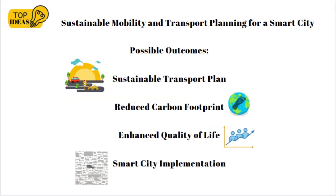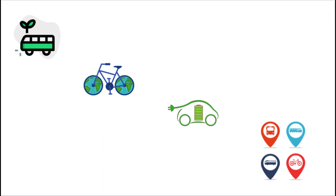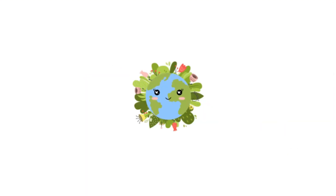By reducing emissions from vehicles and transitioning to green electric vehicles, we can mitigate the adverse impacts of transportation. As we shift towards renewable energy resources, we can further decrease greenhouse gas emissions and make our planet more sustainable.